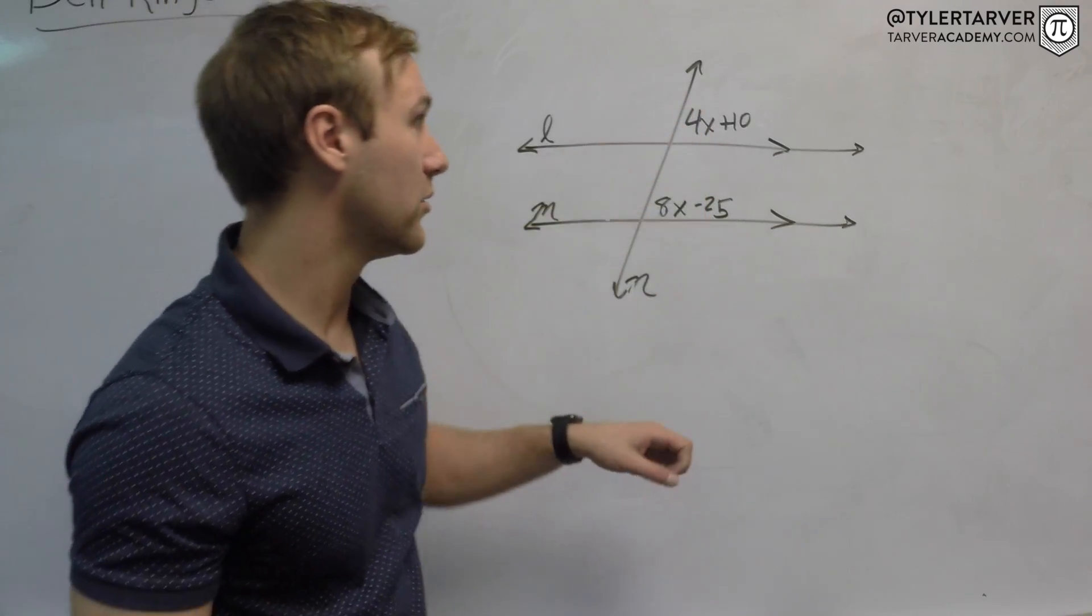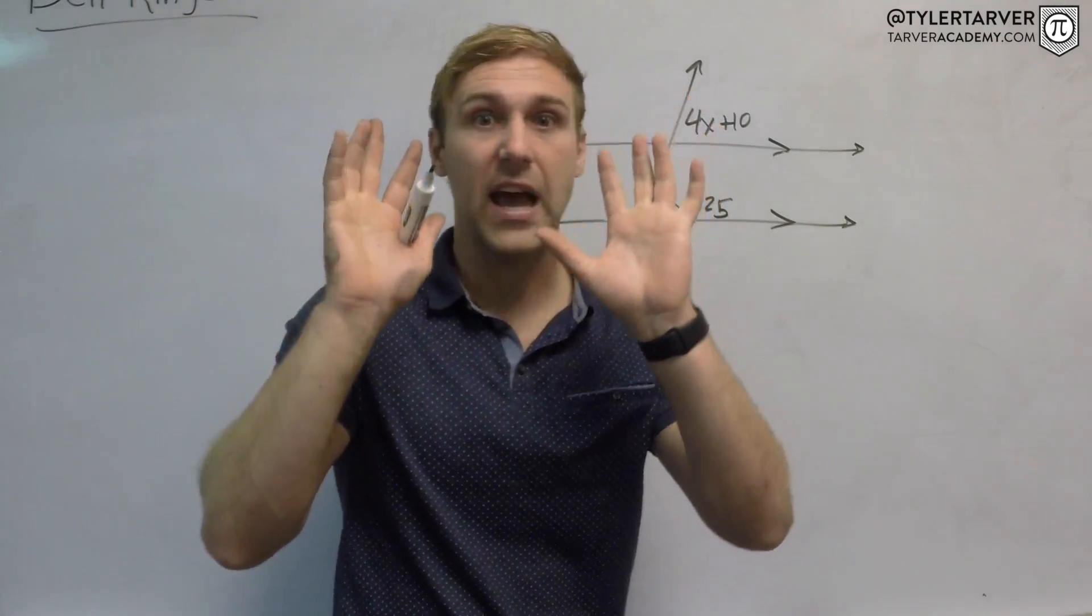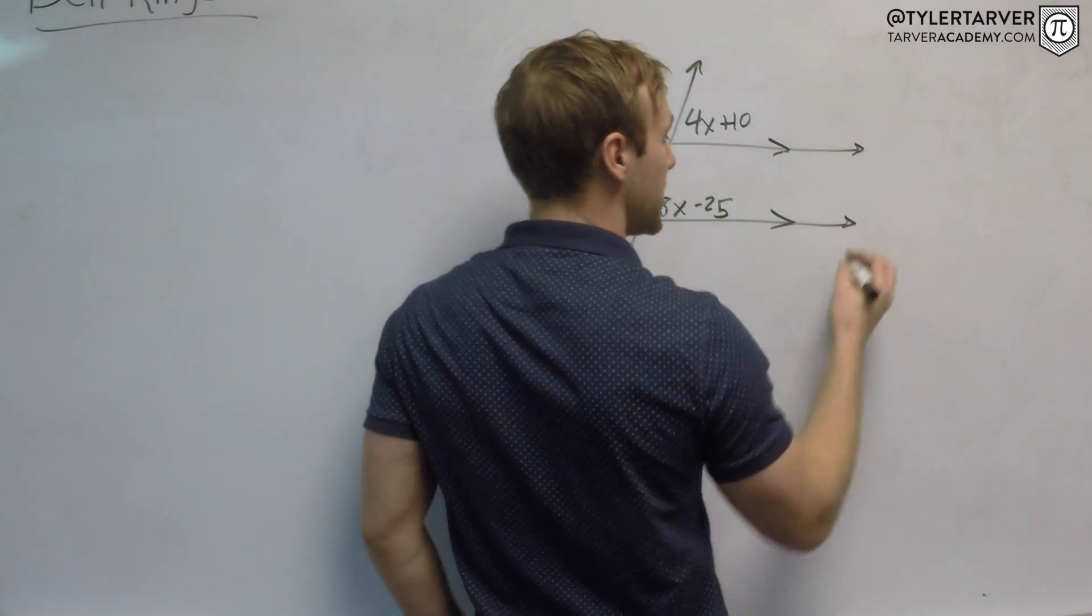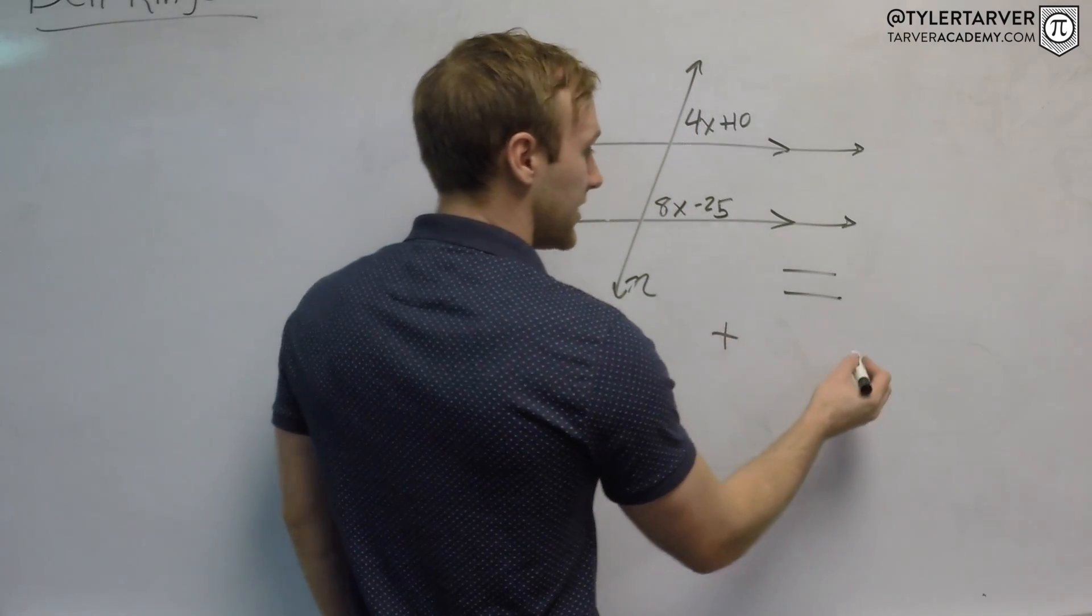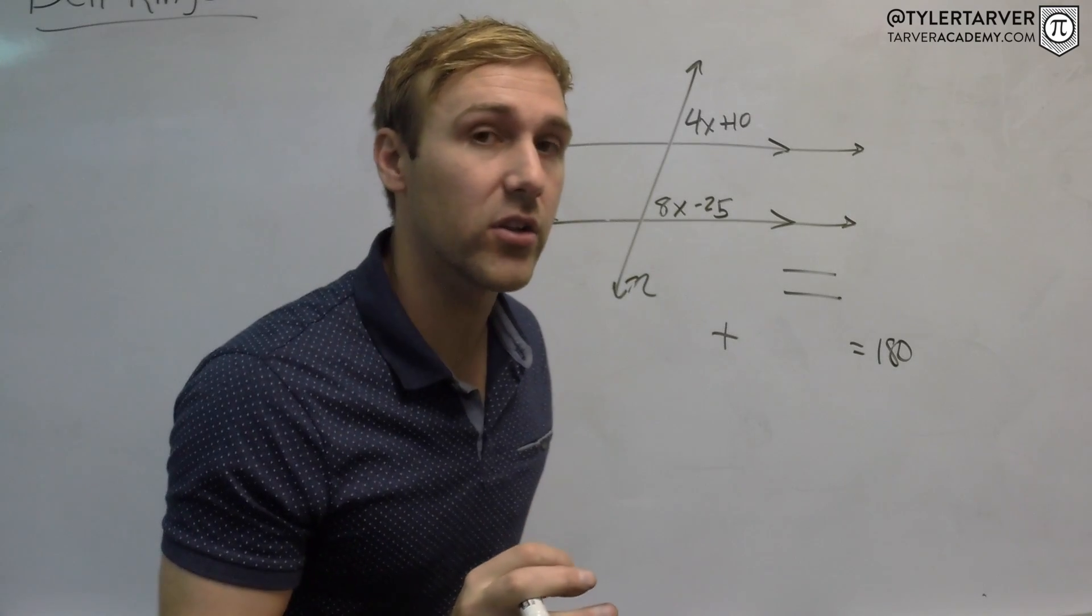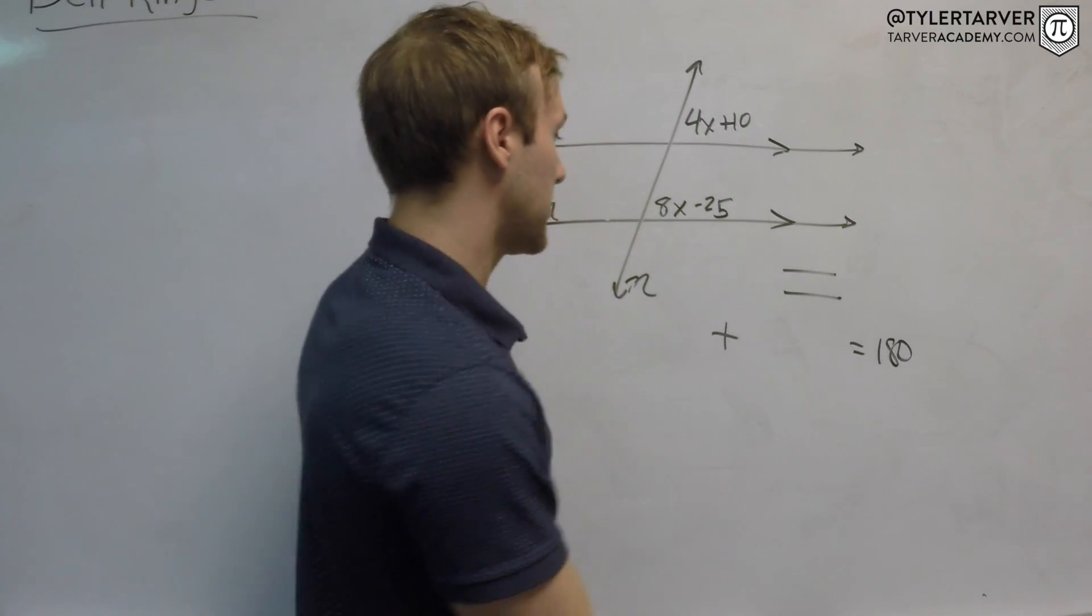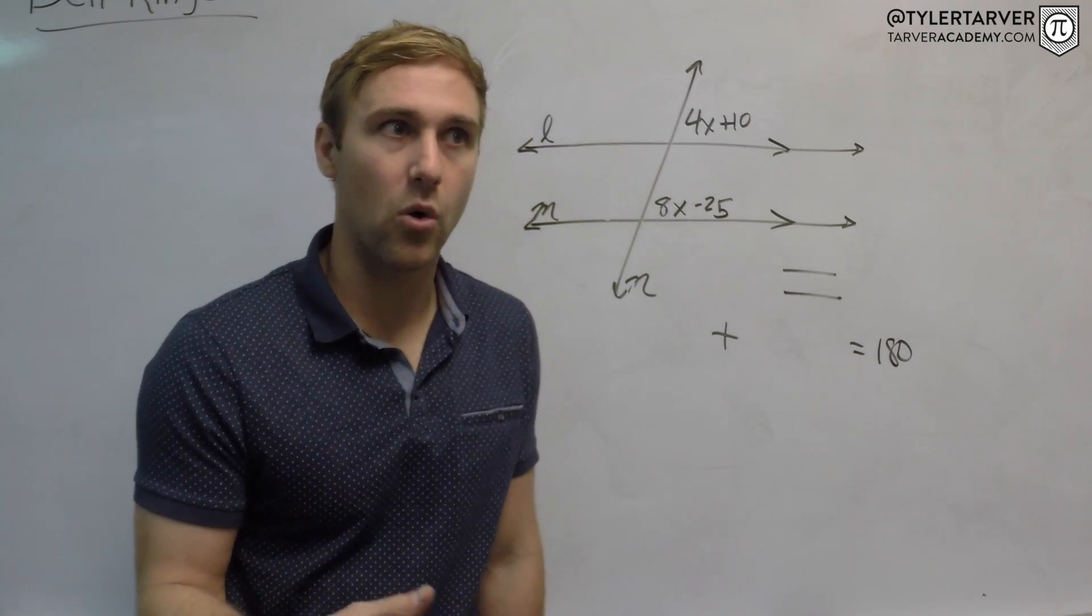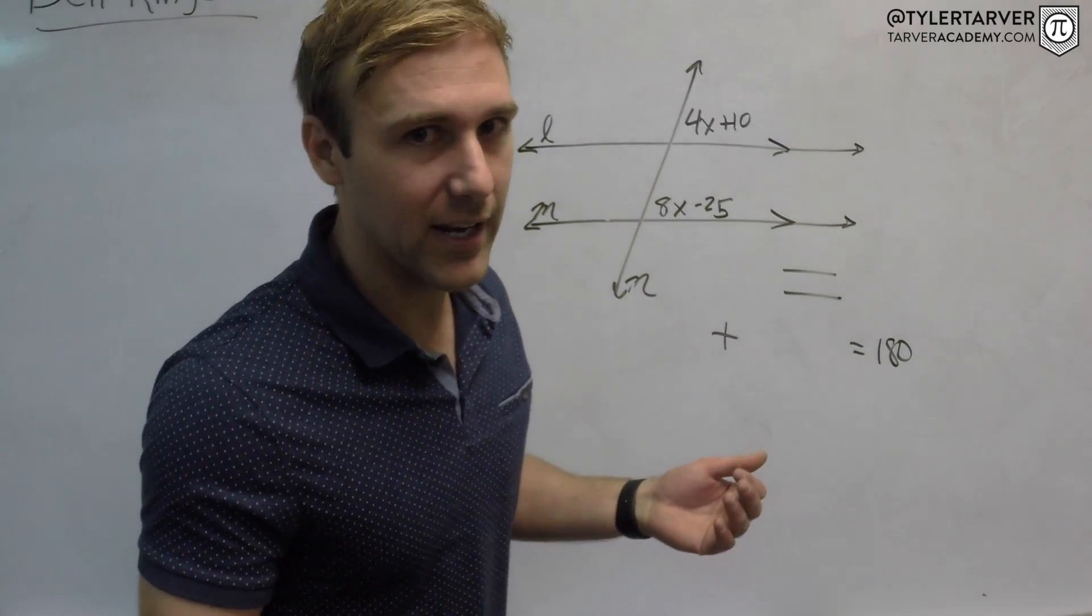Either those angles are going to be equal to each other, or they're going to add up to equal 180. They are either congruent or supplementary - those are the only two options. If they go together and make a straight line, they add up to 180. If they are the exact same measure, then they are equal.